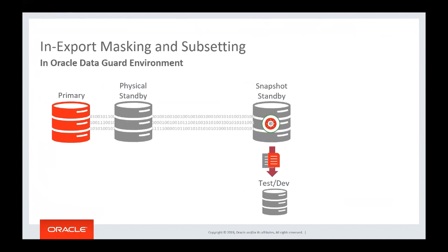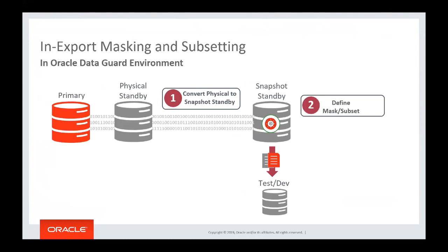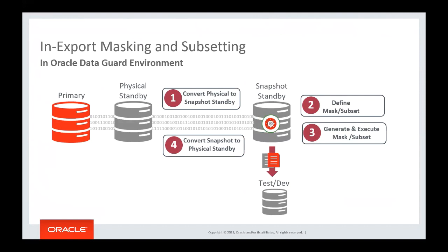Another method uses Data Guard with physical standby and snapshot standby. Convert the physical standby to a snapshot standby, define and create your masking and subsetting script directly on the snapshot standby, generate and execute it to create an export dump file, convert back to physical standby, then apply the dump file to your test and dev environment.